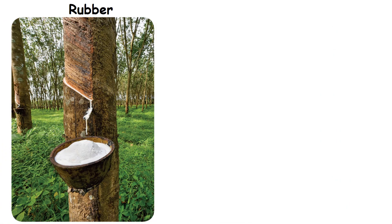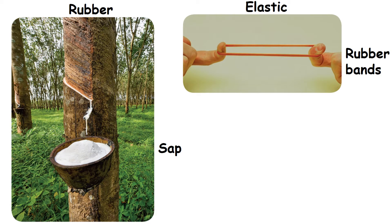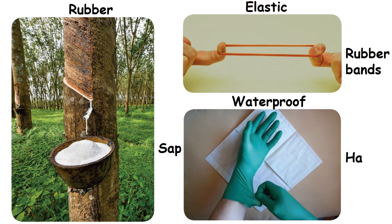Rubber. It is made from the milky substance called sap of the rubber tree. Rubber is elastic, so rubber bands are made from it. It is also waterproof, so hand gloves are made from it.